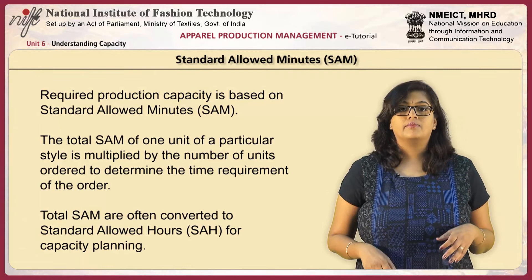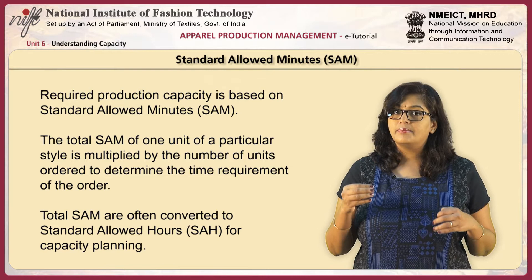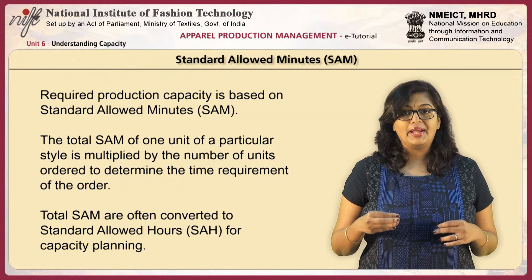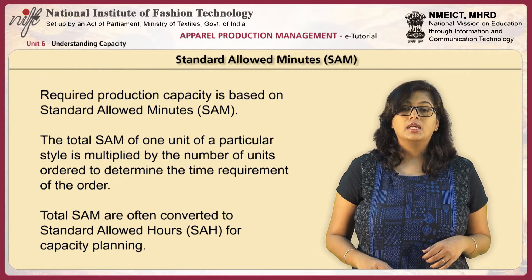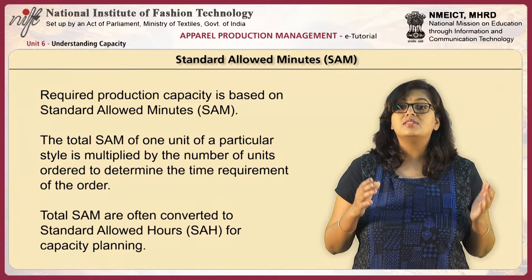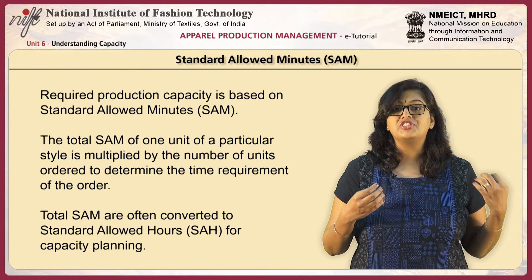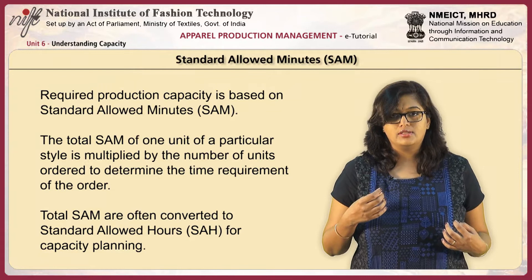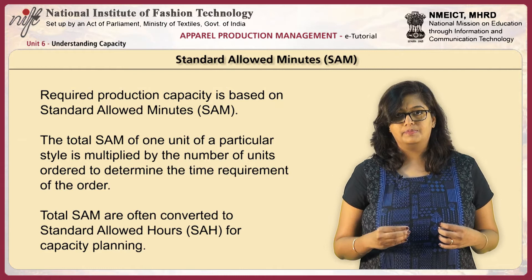The total SAM of one unit of a particular style is multiplied by the number of units — the volume ordered — to determine the time requirement of the order. Since SAM is a short form of Standard Allowed Minutes, it needs to be converted to hours. Total SAM are often converted to Standard Allowed Hours (SAH) for capacity planning.